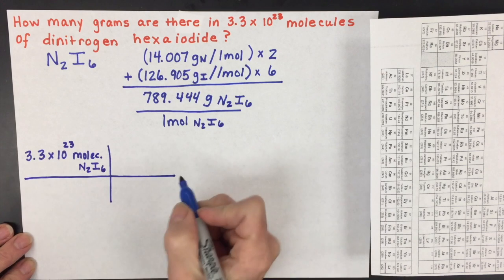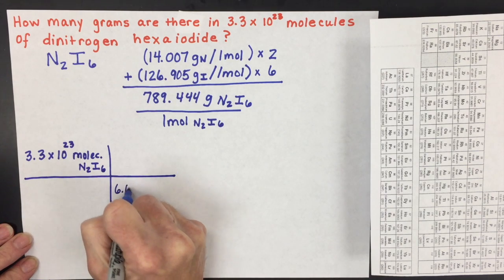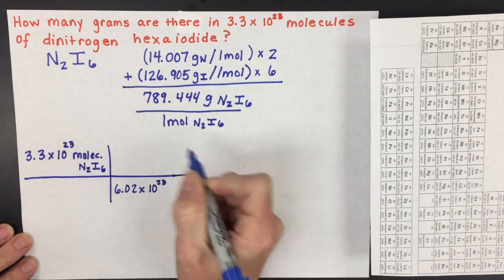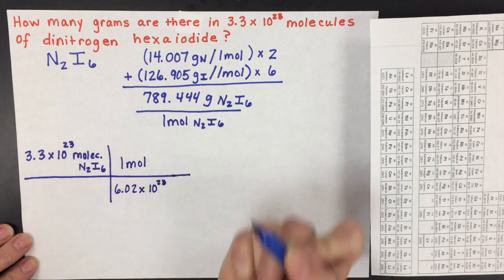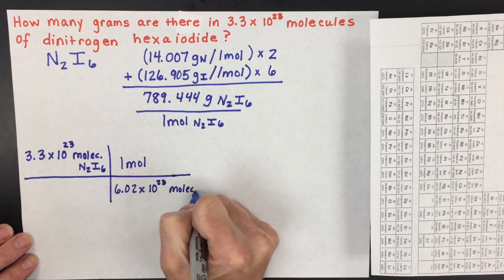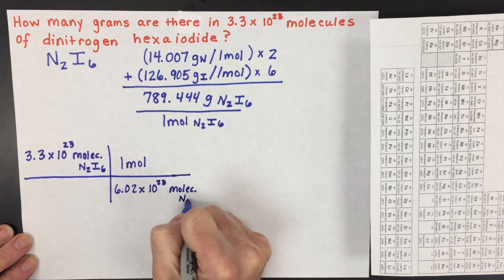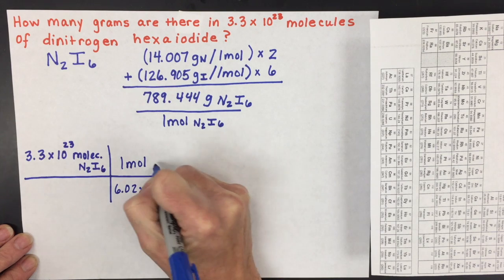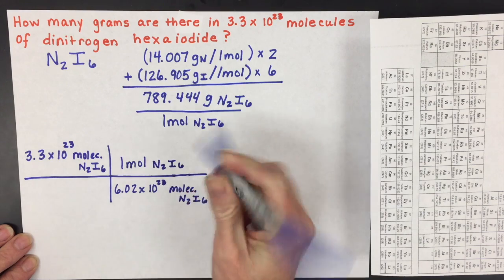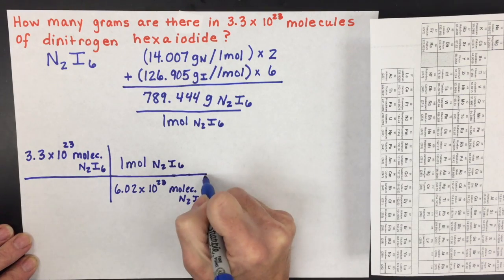The next step is to use Avogadro's number, which again is that there's 6.02 times 10 to the 23 particles in one mole. And our particle in this case, because it's covalent, is a molecule of the N2I6. So that'll convert it to moles of N2I6.